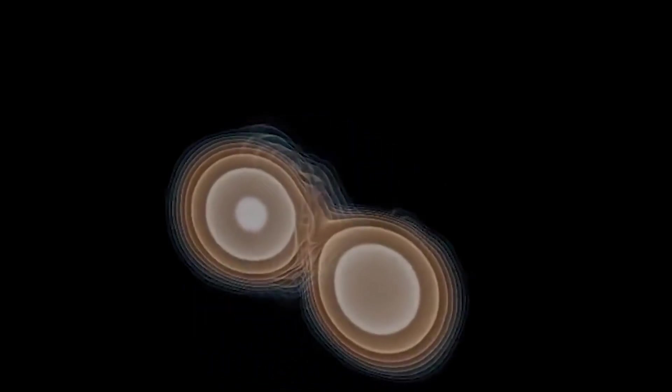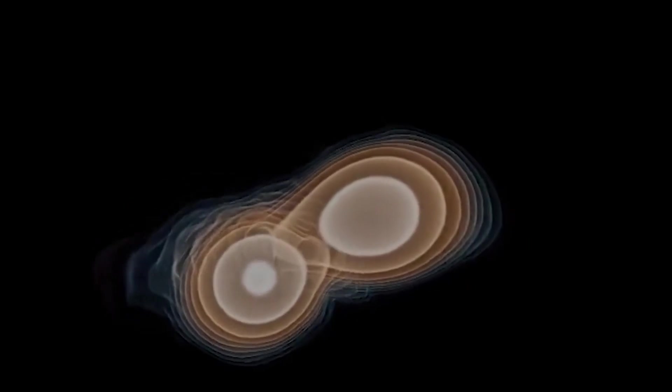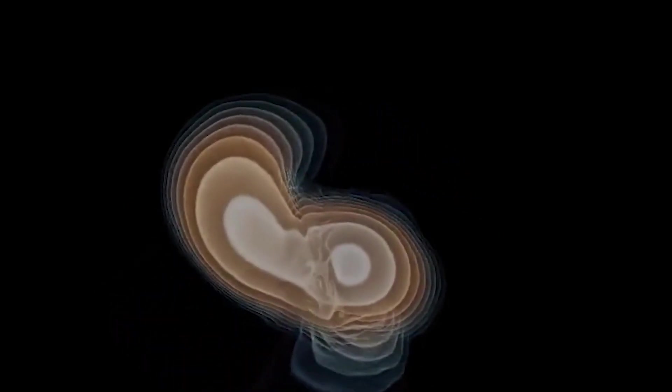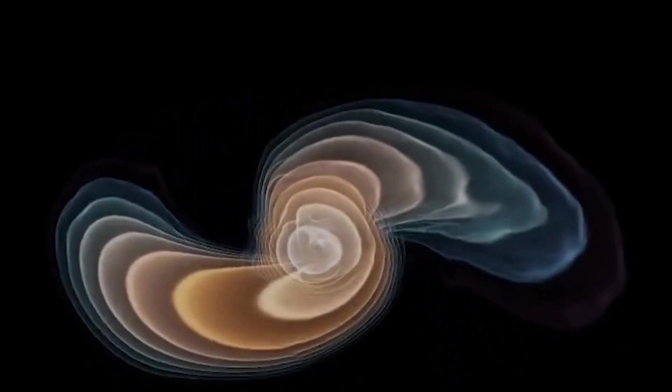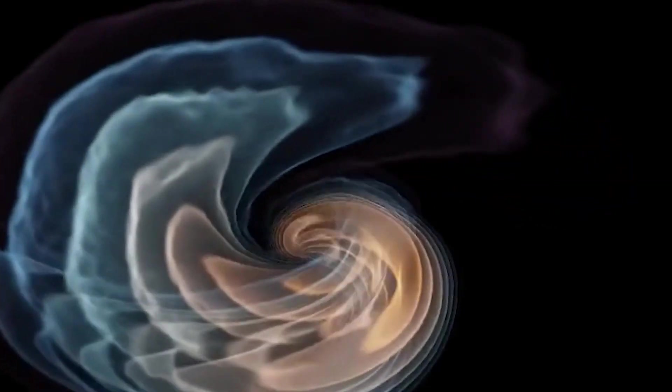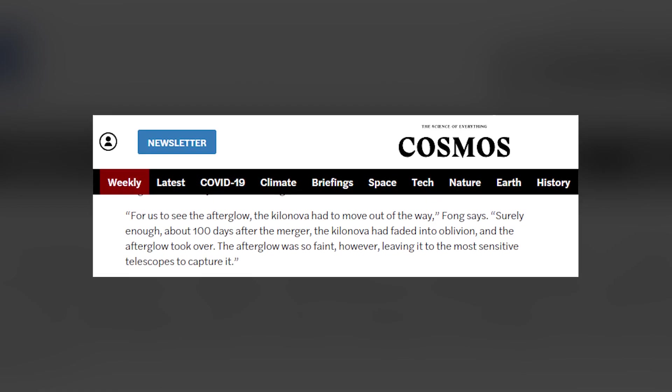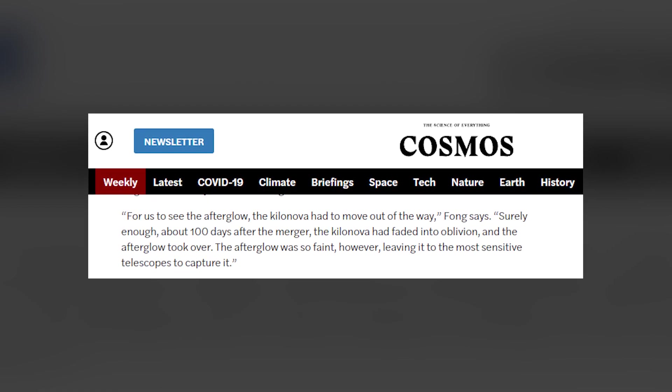But it was exactly this brightness that made its afterglow, formed from a jet traveling near light speed pummeling the surrounding environment, so difficult to measure. For us to see the afterglow, the kilonova had to move out of the way, Fong said.